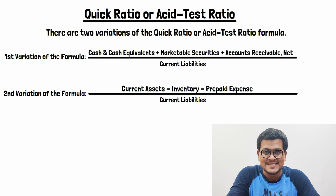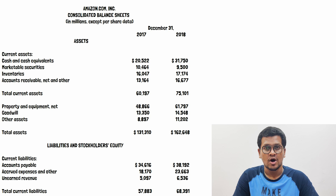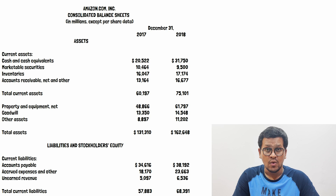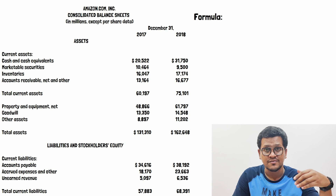Let's walk through an example. We have the balance sheet of Amazon.com for the years 2017 and 2018. We are going to compute the quick ratio for 2017 using the first variation of the formula.